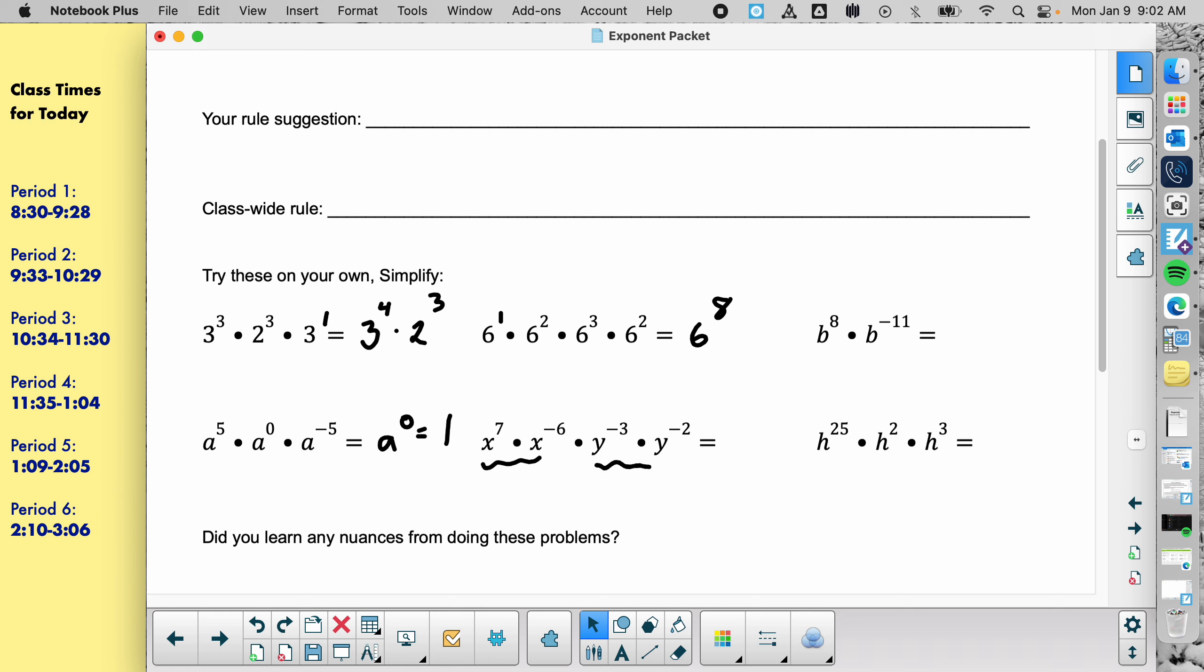You have two different bases, so you would do them separately. So, I'll start off with an x, and I'll add the x powers. Seven plus negative six is one, so you can write the one, or you can leave it off, because the first power you don't usually write. And then I'll do a y. Negative three plus negative two would be negative five. Paige, is there something you'd like to call it? No, but just give me a random number.